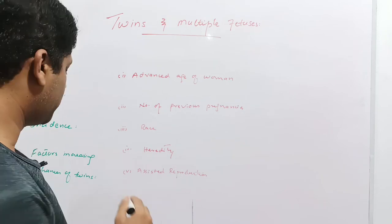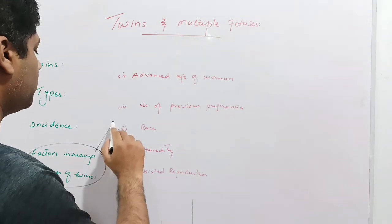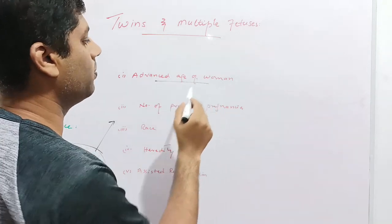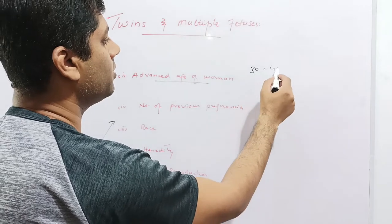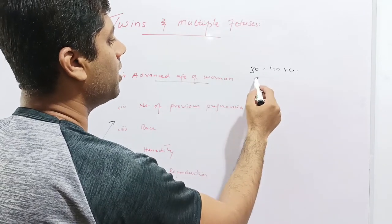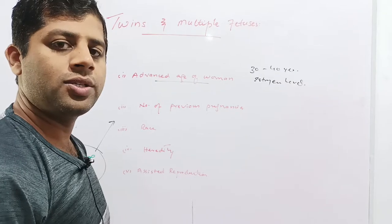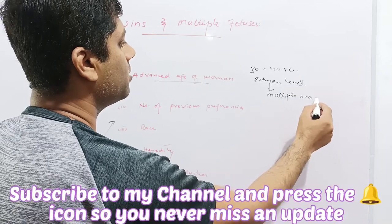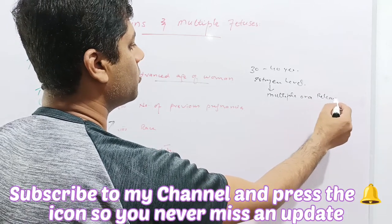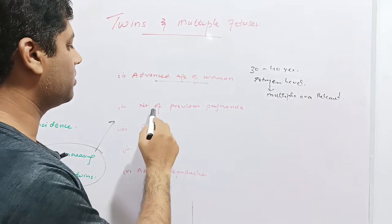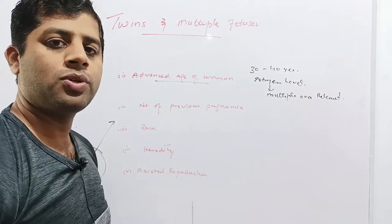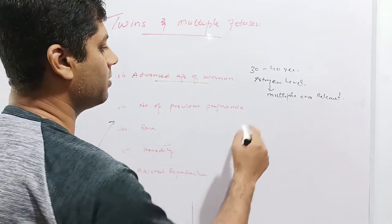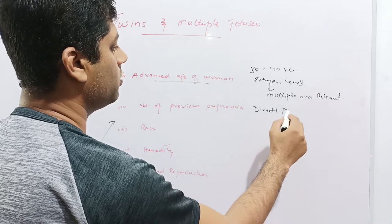Now we'll discuss the factors which increase the chances of twins. The first factor is advanced age of the woman — women over 30 to 40 years of age bear a high estrogen level. This high estrogen level induces multiple ovum production and release. The next factor is the number of previous pregnancies, which is directly proportional to twin production — if a female has had many pregnancies, the chances of twin production will be higher.